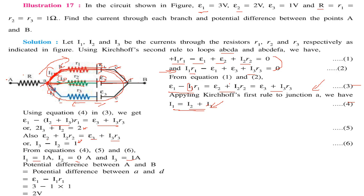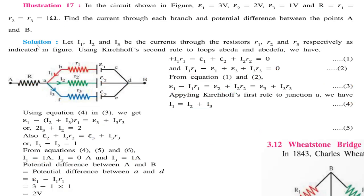The potential difference between A and B is the same as the potential difference between A and D. Taking the path through E1, we get V_AD equal to E1 minus I1 R1. With E1 equal to 3V, I1 equal to 1 ampere, and R1 equal to 1 ohm, the potential difference is 3 minus 1 equals 2V.